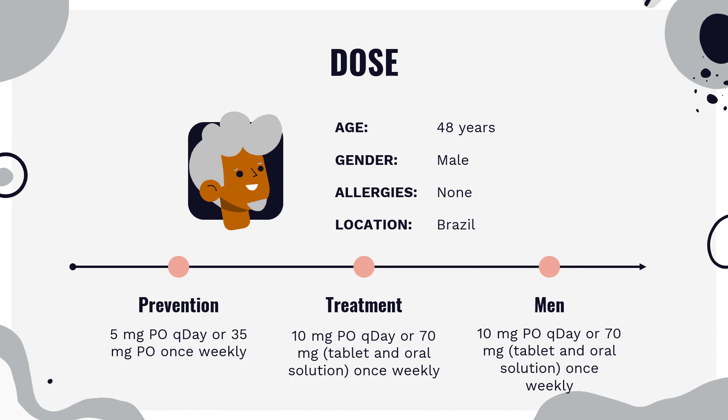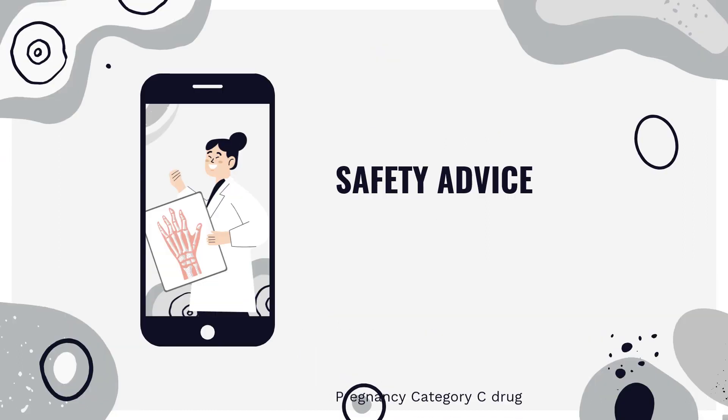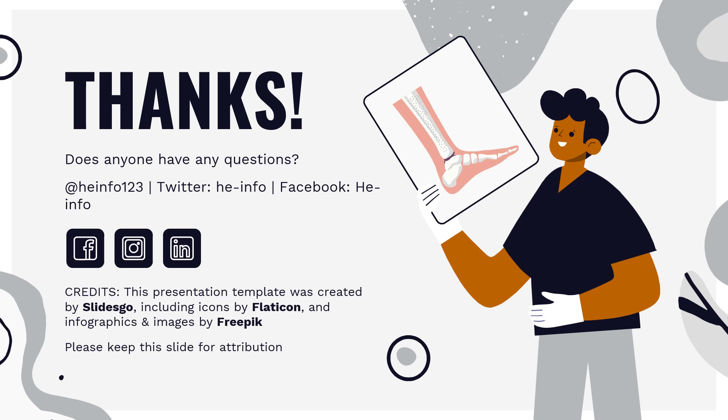Paget's disease (Fosamax only): indicated for treatment of Paget's disease of bone — 40 mg PO daily for 6 months. Safety advice: Alendronate was a pregnancy category C drug under the prior FDA classification system. It is unknown whether alendronate is excreted in the milk of lactating women; use the drug during lactation with caution.